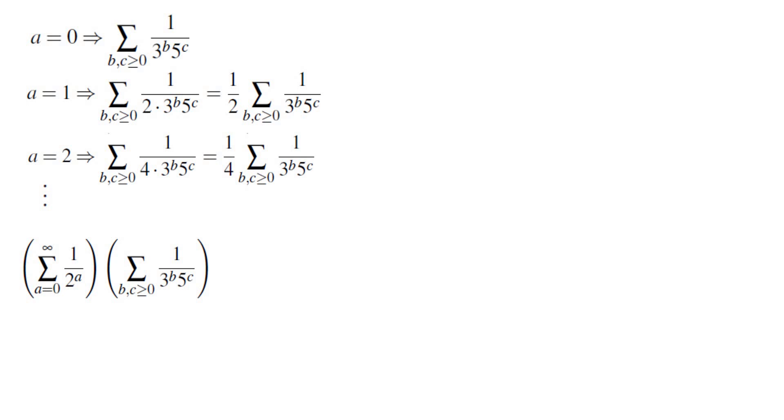Now the first sum is a geometric sum. The second sum is a very similar sum to the original sum except that the denominators have only 2 prime factors instead of 3. Repeating the same argument we can write down the second sum as the sum of 1 over 3 to the B times sum of 1 over 5 to the C. These three sums that we are multiplying are in fact geometric sums.